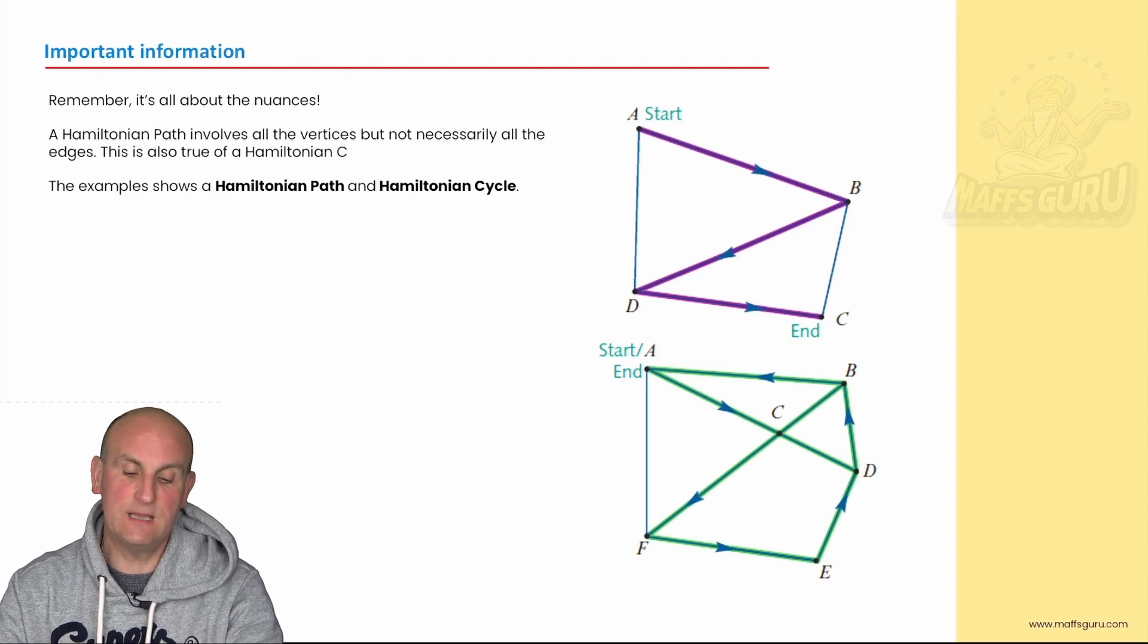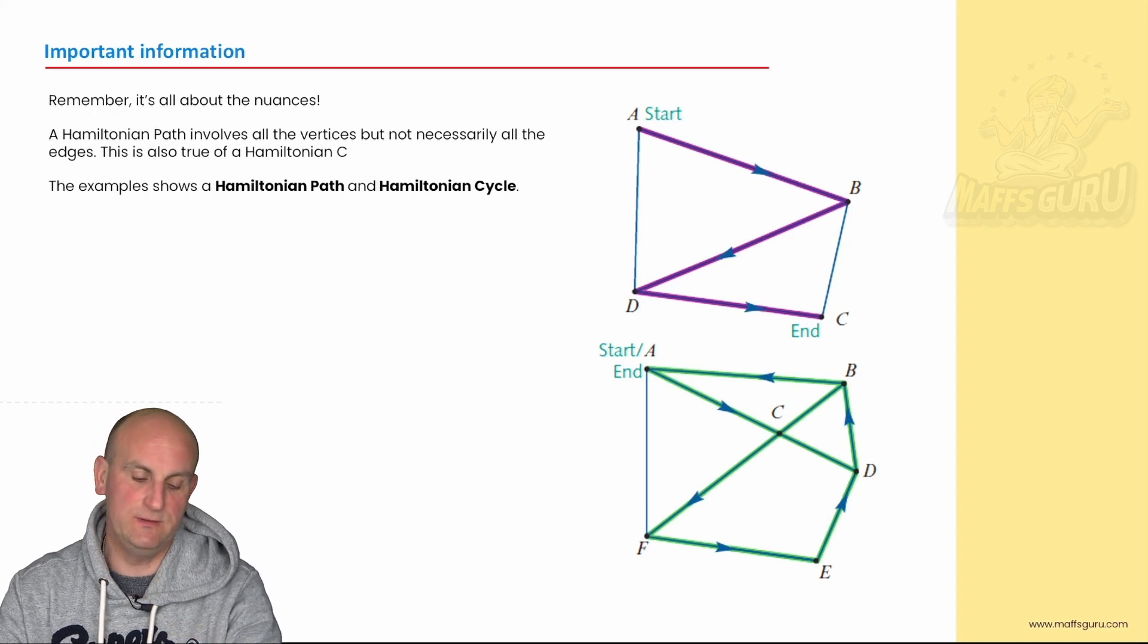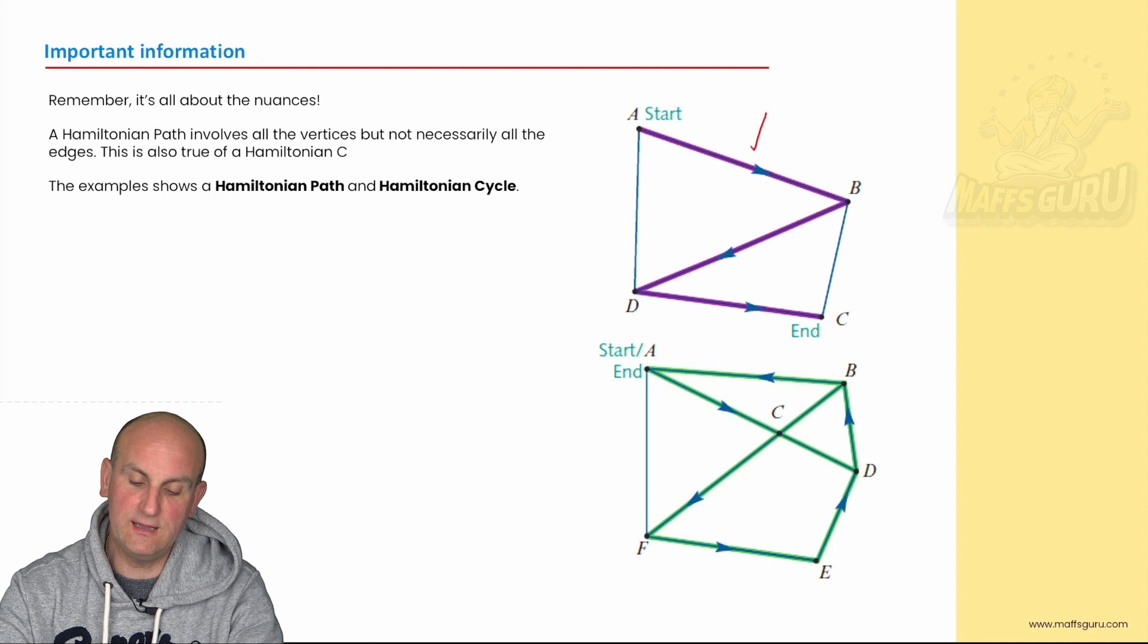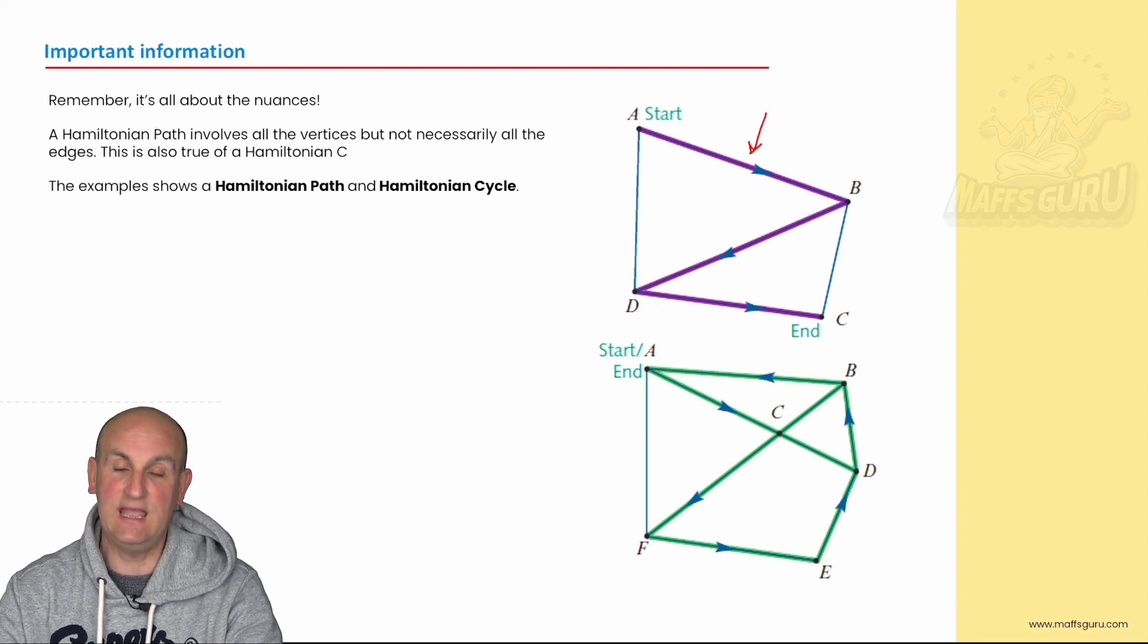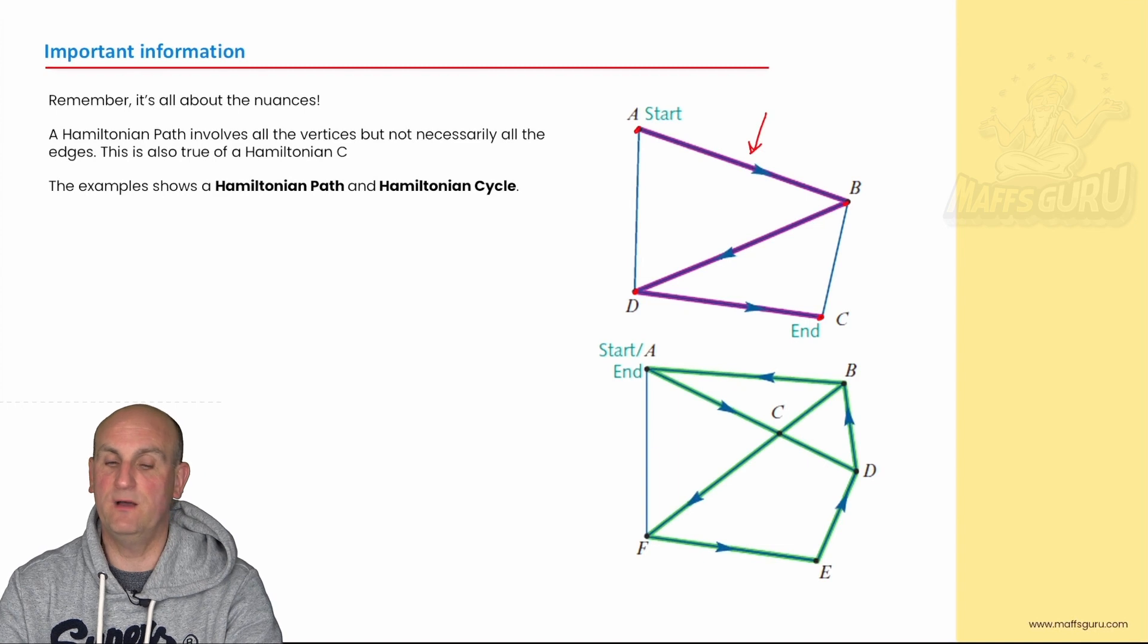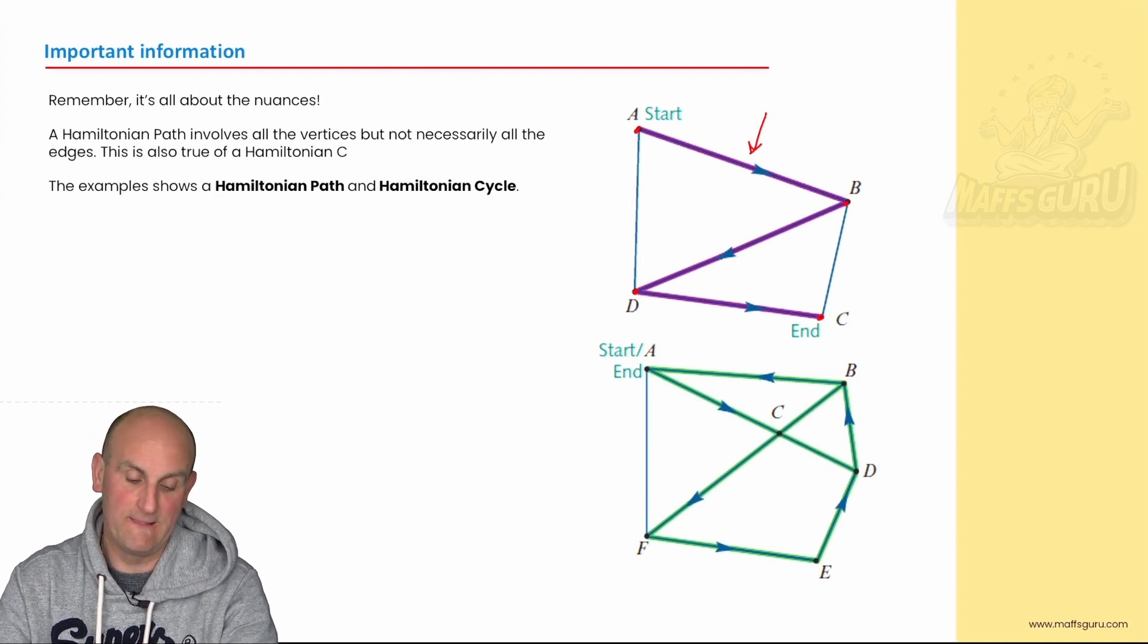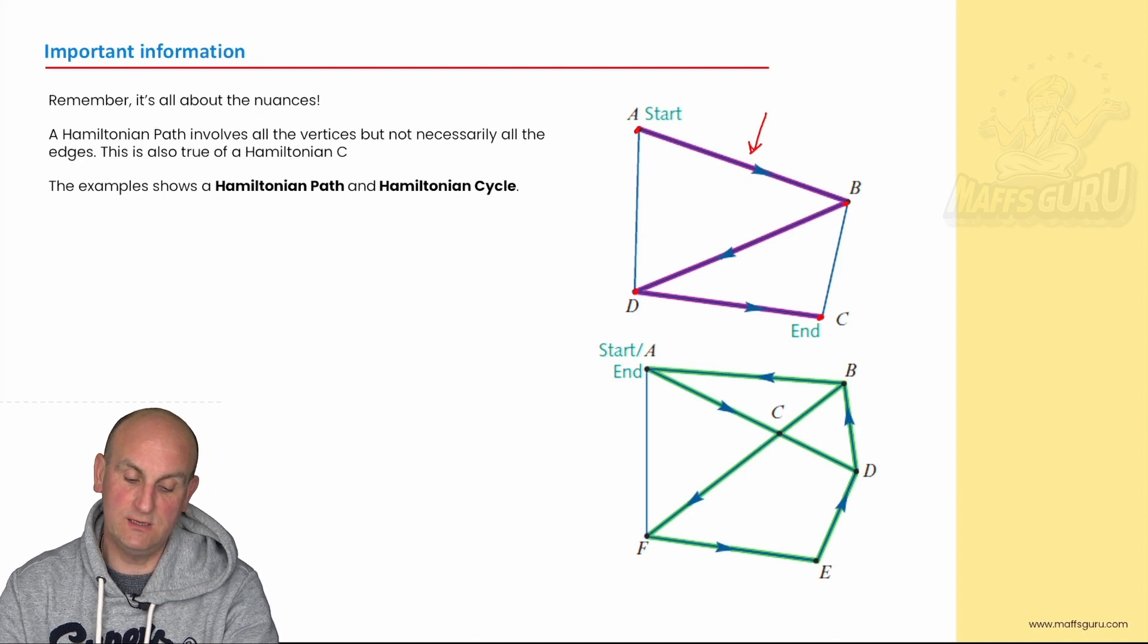Now it's about the nuance. This math course is about the little stuff for your summary book. So a Hamiltonian path involves all of the vertices but not necessarily all of the edges. So if we look at this one here that actually is a Hamiltonian path. Why? Because I'm starting at A, I'm going to all of my vertices but I'm missing some of my edges. That's fine. I wouldn't necessarily have to go along all of those edges.